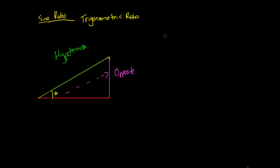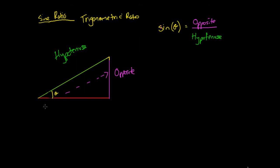If it has a certain ratio between these two sides, then we can determine exactly what the angle is. For our sine ratio — the sine of theta — if that equals a certain ratio of our opposite side divided by our hypotenuse side, then this gives us a fixed angle. There's only one possible angle that could occur and give us side lengths in this certain ratio.